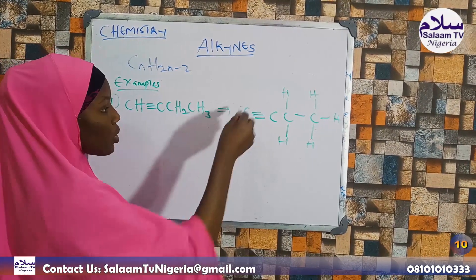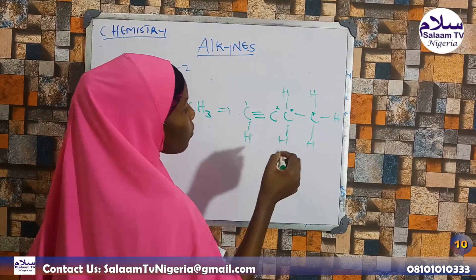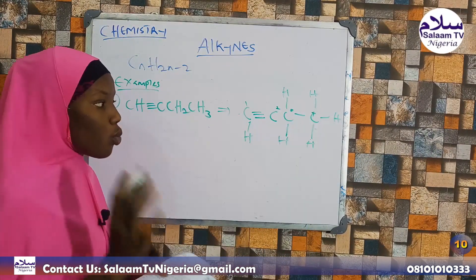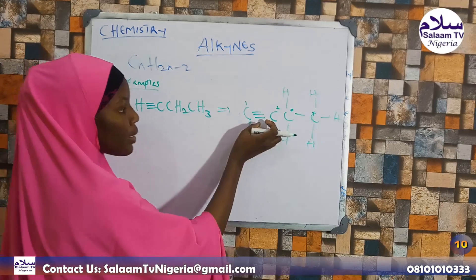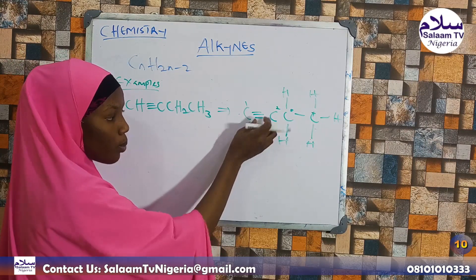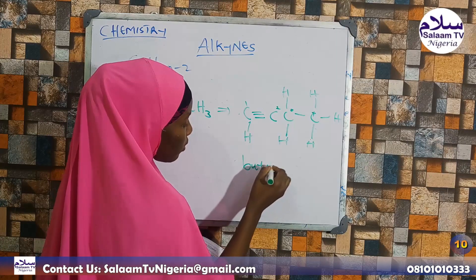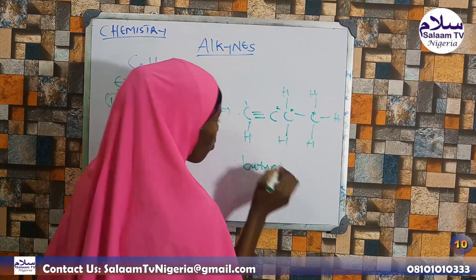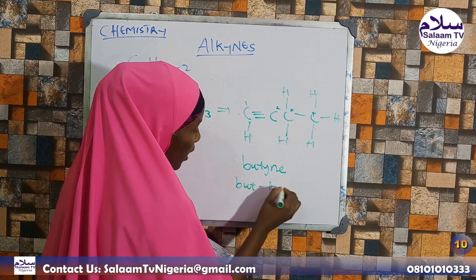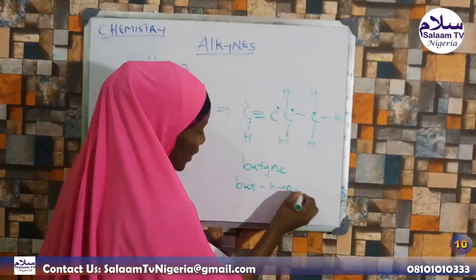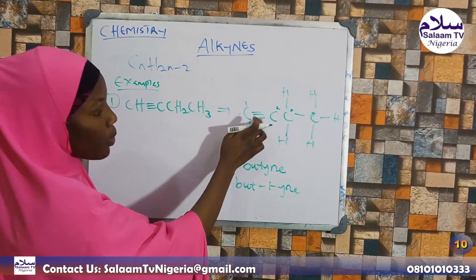Counting carbons: 1, 2, 3, 4. The presence of the triple bond gets the lowest number. So when the triple bond is at position 1, we assign the number 1 — meaning 1 is the lowest number for the triple bond position. That is the rule.